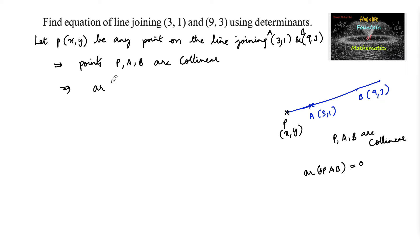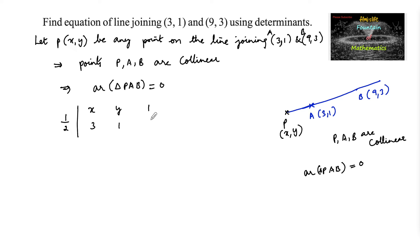This implies the area of triangle PAB is equal to 0, that is, one-half times the absolute value of the determinant with rows: (x, y, 1), (3, 1, 1), (9, 3, 1) equals 0. The area of a triangle formed by vertices (x1,y1), (x2,y2), (x3,y3) is given by the determinant with rows (x1,y1,1), (x2,y2,1), (x3,y3,1).